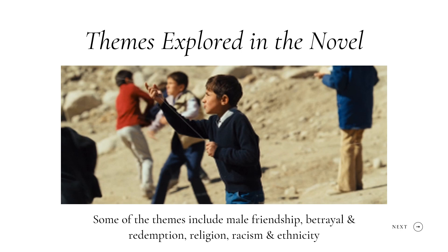Several topics are explored throughout the work including male friendship, betrayal and redemption, religion, prejudice, and ethnicity. The issue of race and ethnicity, for example, is depicted both blatantly and subtly and systematically throughout the narrative. The novel's most obviously racist character excuses his rape of Hassan by remarking, 'It's just a Hazara.'